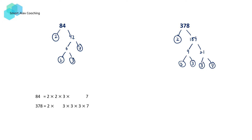In order for us to find the HCF of 84 and 378, we're going to collect all the like factors. So we're going to take 2, 3, and 7. This means that the HCF of 84 and 378 is going to be given by 2 times 3 times 7, which is equal to 42.